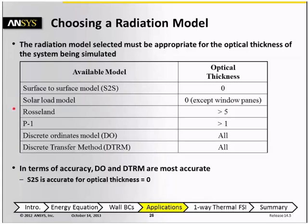For the Rosseland model, the optical thickness should be larger than about five. For the P1 model, it should be larger than about one. And for the discrete-ordinates model, or DTRM, which is a ray tracing method, there's no restriction on the optical thickness, so it can go anywhere from zero to very high.